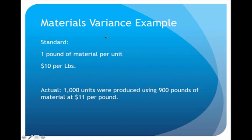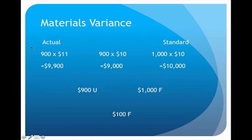For an example, a company is manufacturing a product and has identified their standards for materials. Ideally, every product made should only require one pound of material, and they should ideally pay ten dollars per pound. In this time period, they actually produced one thousand units, used nine hundred pounds of material at eleven dollars per pound. So on the actual side, nine hundred pounds times eleven dollars equals nine thousand nine hundred dollars.